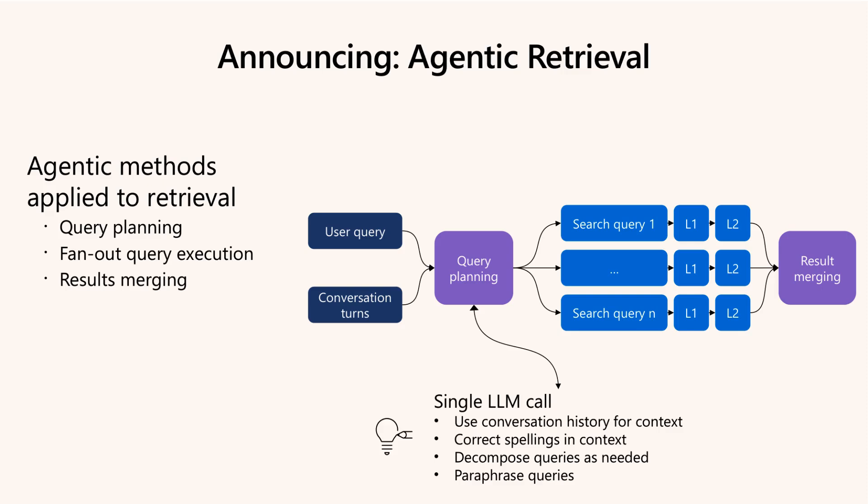To overcome these limitations, agentic retrieval takes a transformative approach. Instead of a one-shot search, it employs internal language models to plan, decompose, and manage multiple parallel retrievals. It merges the results into a coherent answer, leveraging conversational context to maintain relevance and accuracy. This dynamic workflow replaces traditional single-pass search, especially for complex queries.